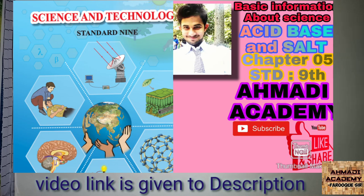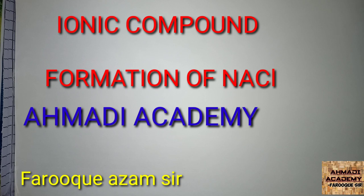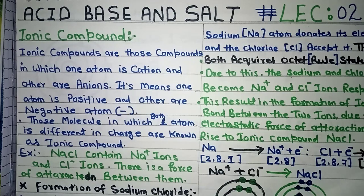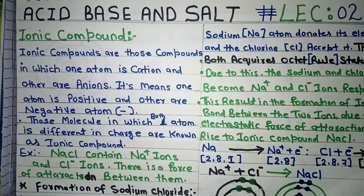Let's start our lecture. Today's first topic is ionic compounds and formation of sodium chloride. Ionic compounds are those compounds in which one atom is a cation and the other is an anion — meaning one atom is positive and the other is negative. Those molecules in which both atoms have different charges are known as ionic compounds. So bachon, ionic compound kise kehte hain — agar aap ke paas koi molecule ya compound hai jis mein do atoms hain aur dono ke paas charge alag hai, ek positive aur ek negative.